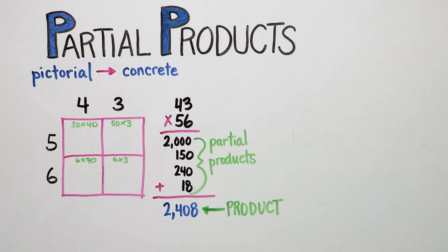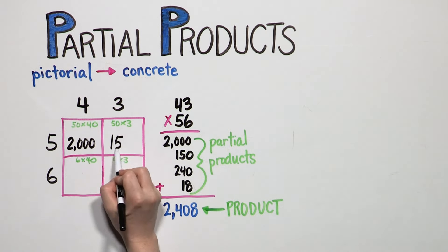Using partial products removes the pictorial step but places the same emphasis on the actual value of the numbers being multiplied.